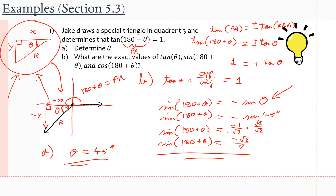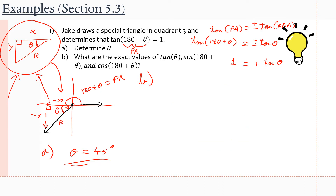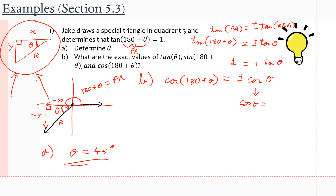Now we need to evaluate cosine of (180 + θ). Cosine of (180 + θ) equals plus or minus cosine θ. We need to figure out if the cosine ratio is negative or positive. Going back to the triangle, cosine of θ equals X over R — adjacent over hypotenuse. But in quadrant three, we're going in the negative X direction, so this X value is negative, meaning we're going horizontally left. So the cosine ratio is going to be negative.